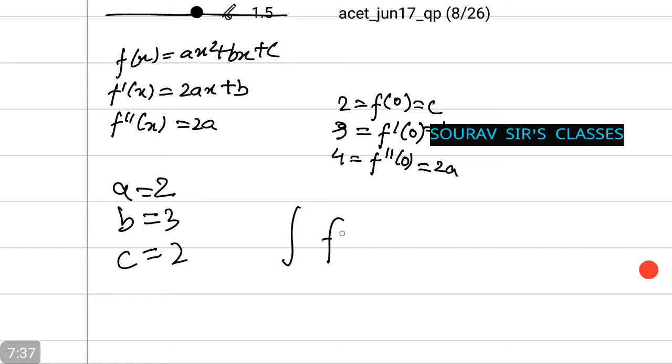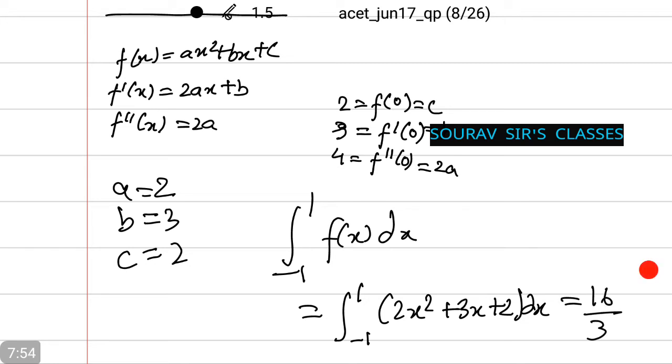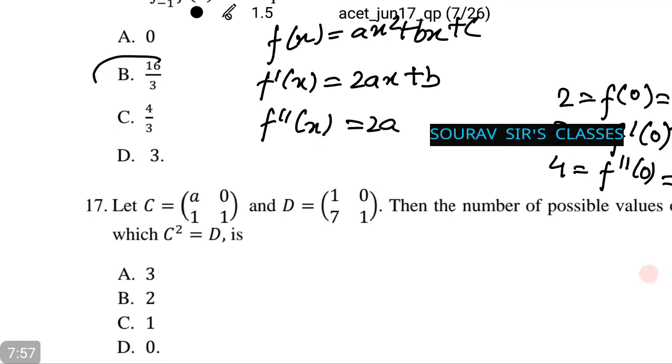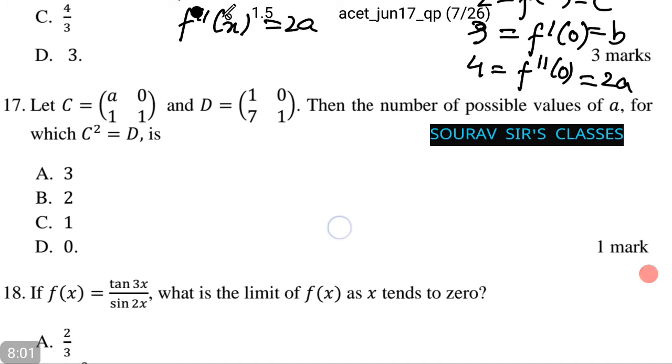Thus f(x) dx ranging from minus 1 to 1 equals integration minus 1 to 1 of 2x squared plus 3x plus 2 dx, which is equal to 16 by 3. That is option number B.